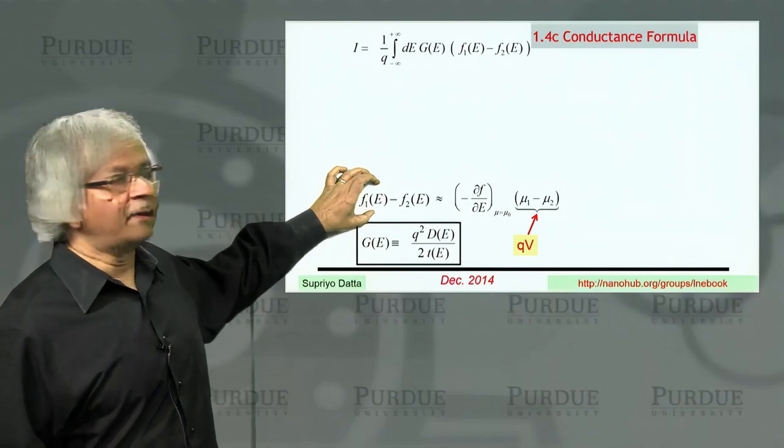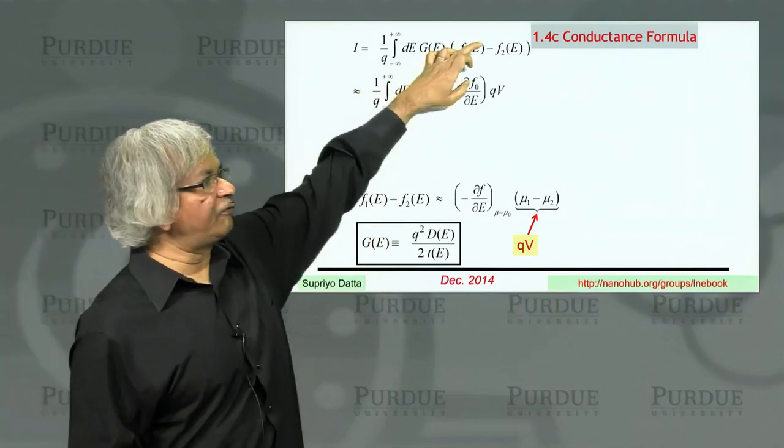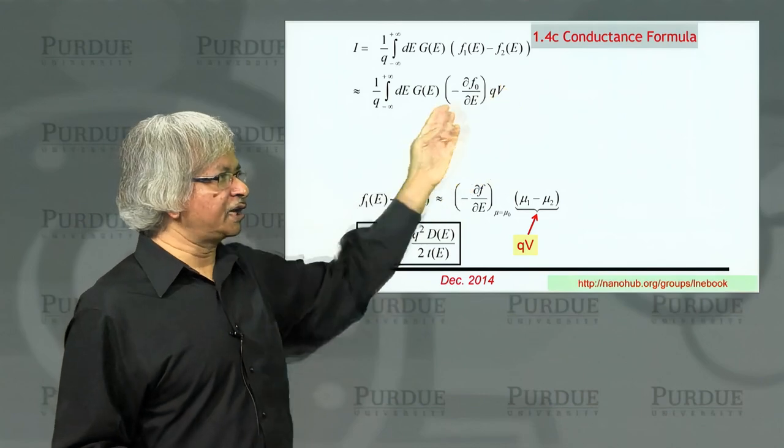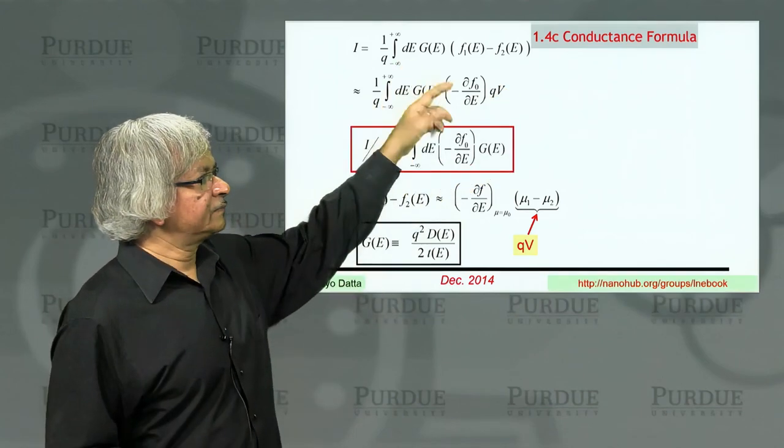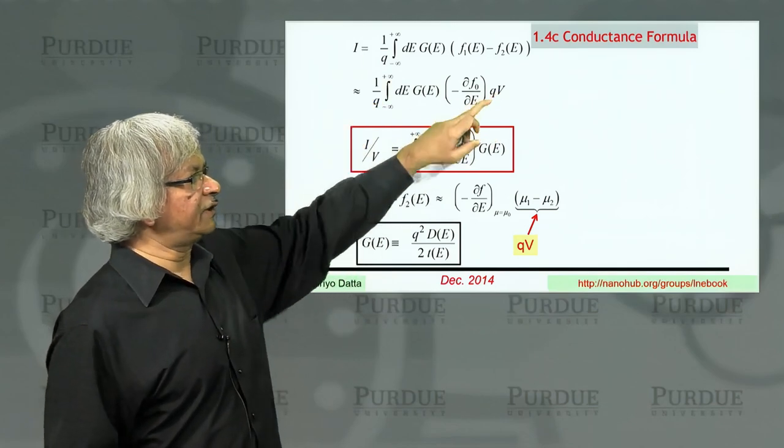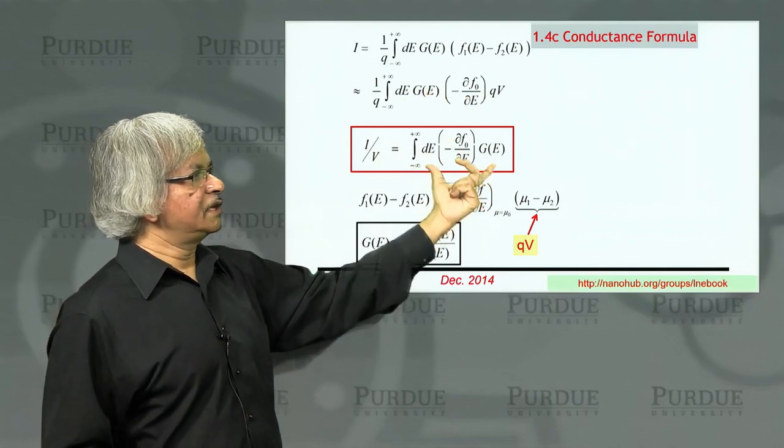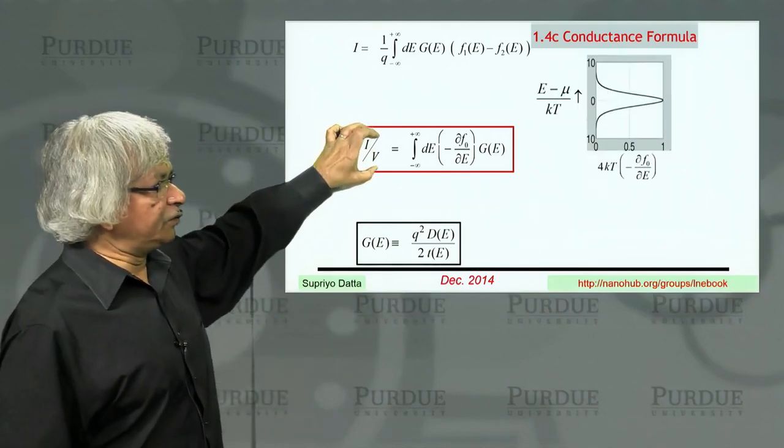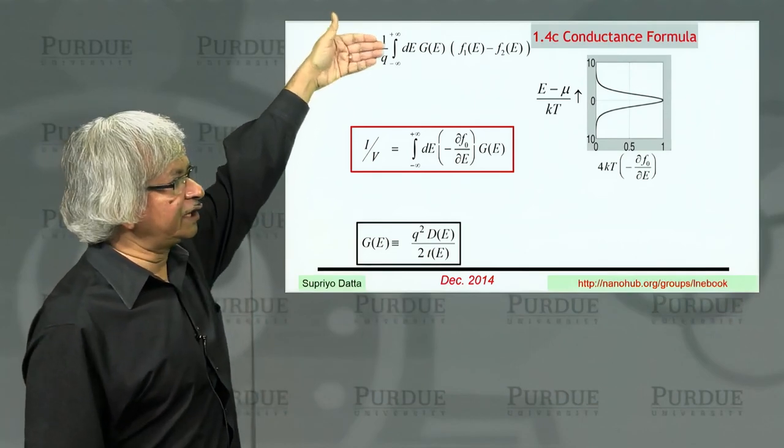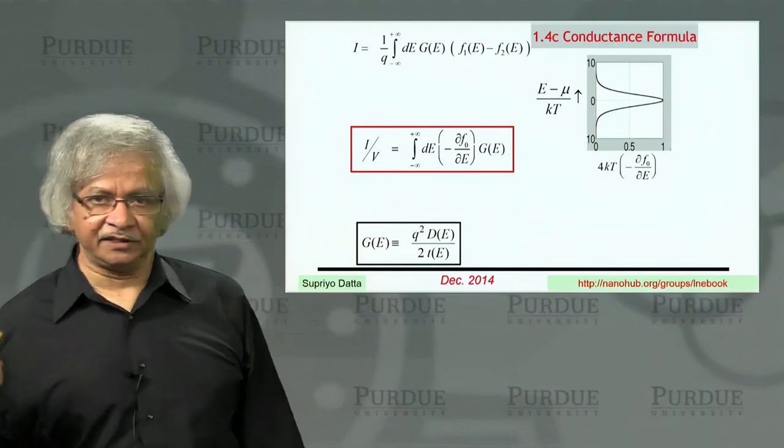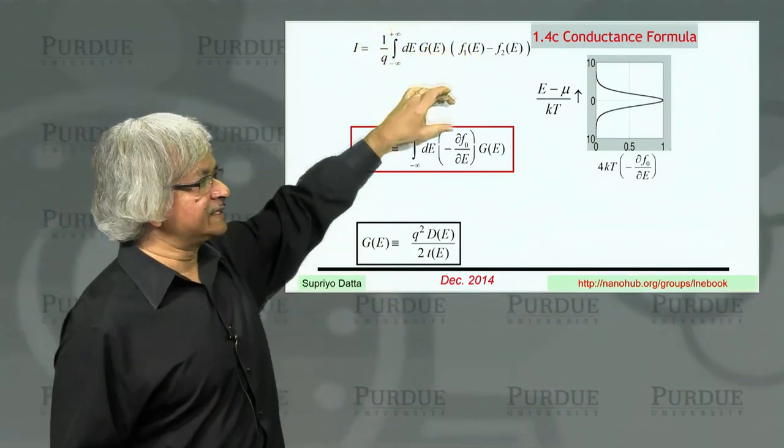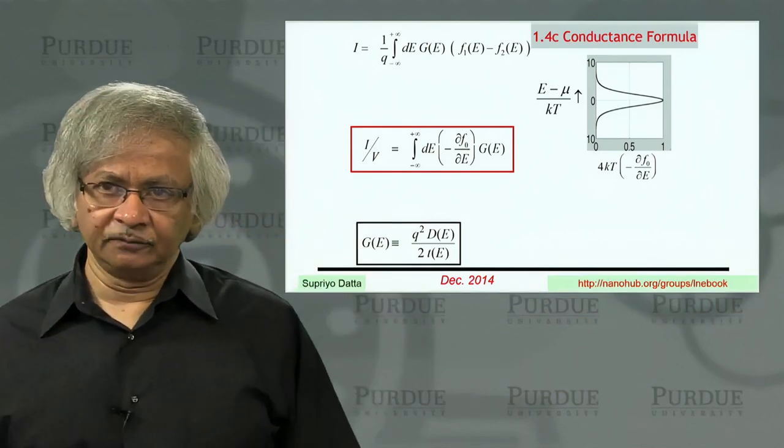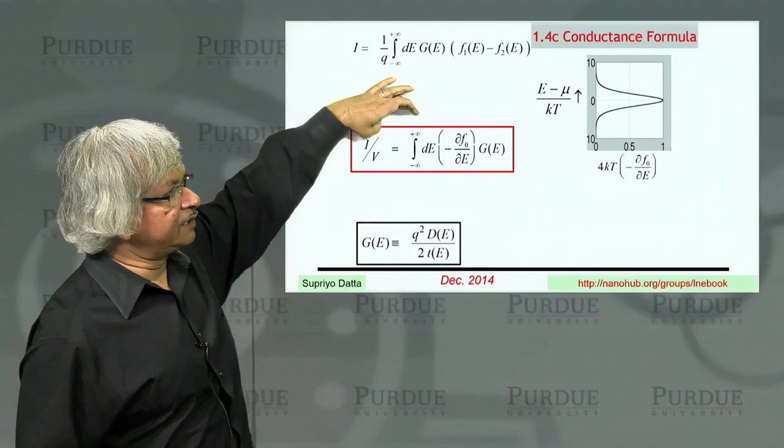So we now use this result and go back to our original one here. So instead of F1 minus F2, we put in this partial times QV. And the QV is a constant, it's independent of energy, so it can be pulled out of that. The Q cancels this Q, and so current divided by voltage you could write as this quantity. So that's this conductance formula that we were talking about. That current divided by voltage. So this is the general current formula. And what we did in getting from here to here is use this Taylor series expansion idea, that F1 minus F2 can be written as del F del E times the applied voltage. And that applies only if the applied voltage is small compared to kT. So using that idea, you get this expression for the conductance.